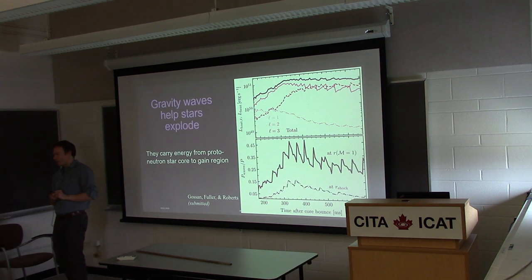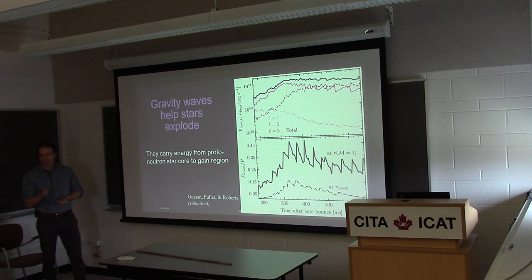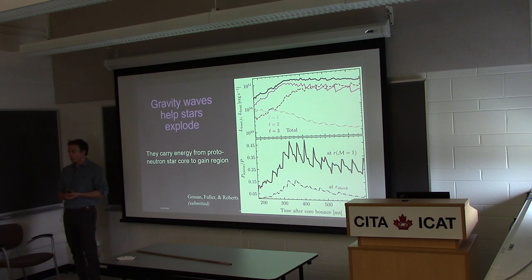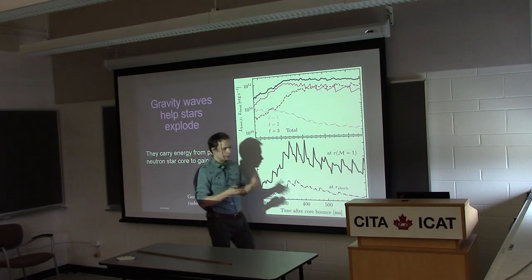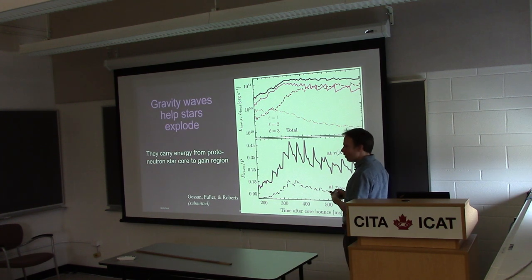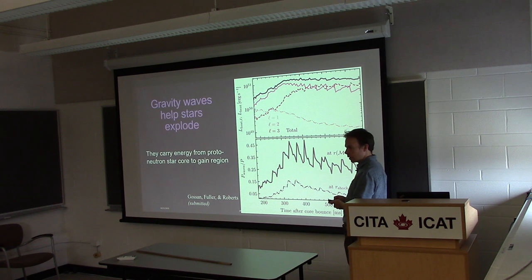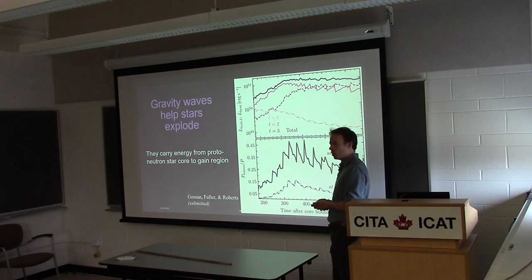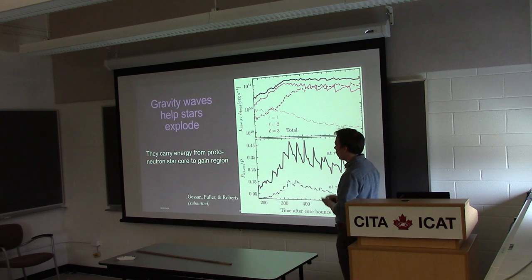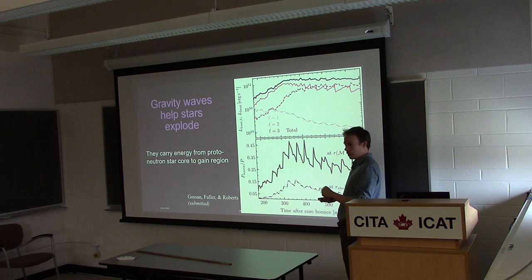A really interesting topic I'm not going to discuss in depth today is a project Sarah Gossin and I just submitted: how gravity waves may actually help drive core collapse supernova explosions. In the center of a protoneutron star, you excite gravity waves because there's convection there — neutrino-driven convection. Those waves can go out and exert a significant pressure on the shock, carrying of order 10^51 ergs per second of energy. So they can be an appreciable source of energy in some core collapse supernovae, but this is not really discussed much in the literature.